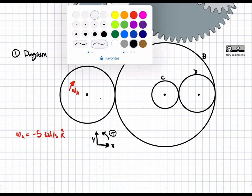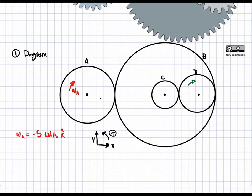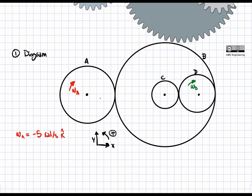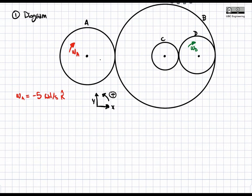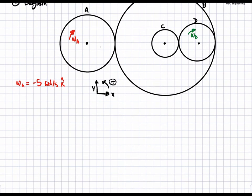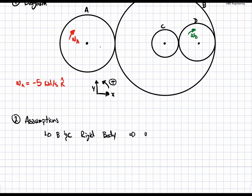What we're going to have to do in this problem is figure out the angular velocity of D, omega D. Since we're given the angular velocity of A, we need to find the angular velocity of B, because A and B mesh. Since B and C are a rigid body, they have the same angular velocity. Then C and D mesh, so we can get the corresponding angular velocity. The main assumption for this problem is that B and C are rigid bodies, and therefore the angular velocity of B equals the angular velocity of C.